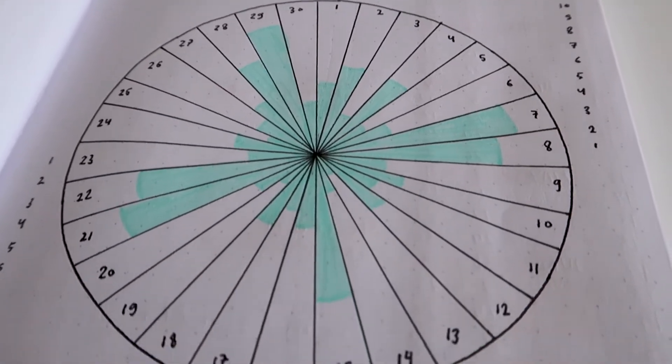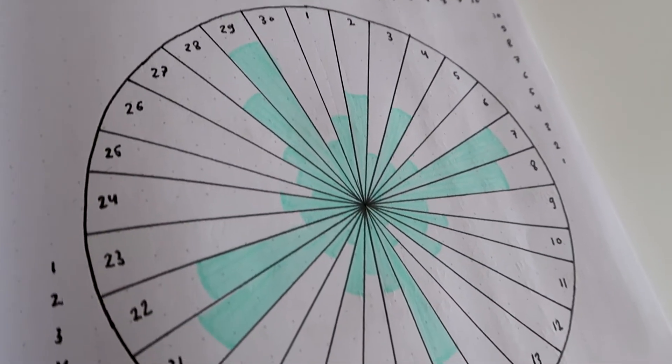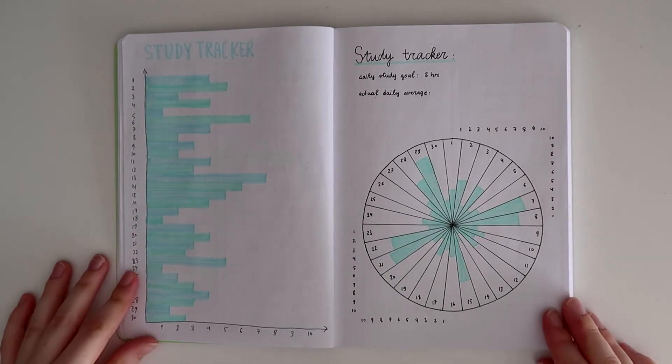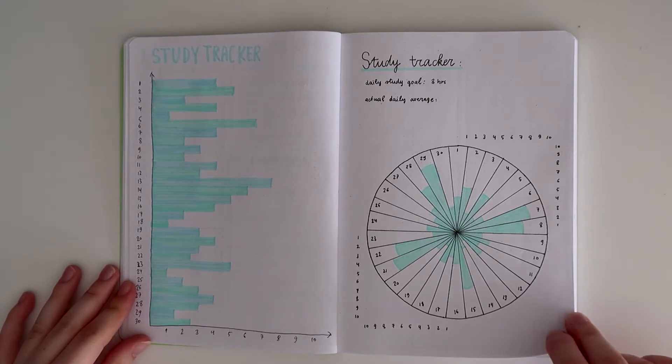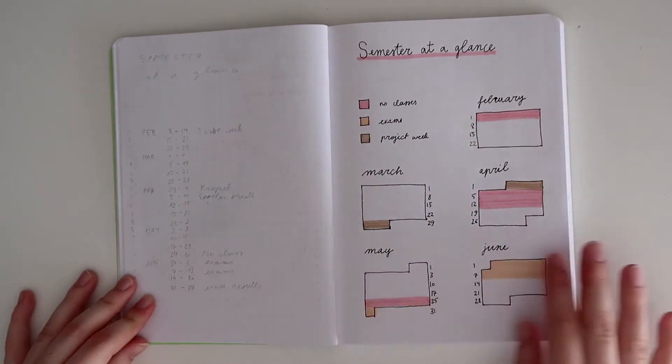This is another version of it where I just divided a circle into little pie slices. I just divided 360 by 30 for the amount of days, and then I fill it up based on how many hours you spent.